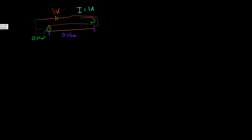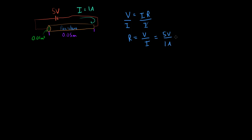The first thing we need to do is find the resistance. All we have to do is use Ohm's law, which is voltage equals current times resistance. If we divide both sides by current, the resistance is equal to the voltage divided by the current. That is equal to five volts divided by one amp, which is five Ohms. So the resistance is equal to five Ohms.